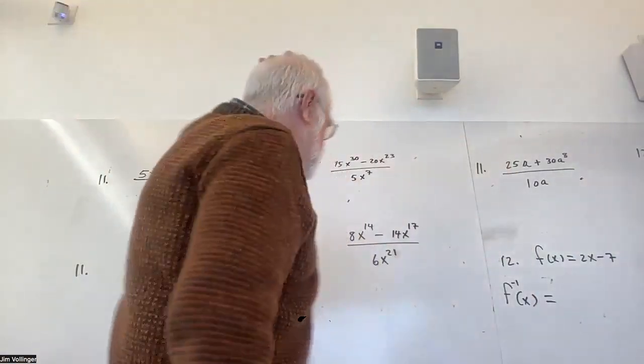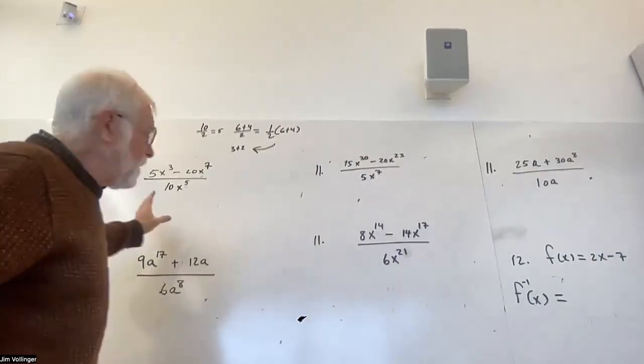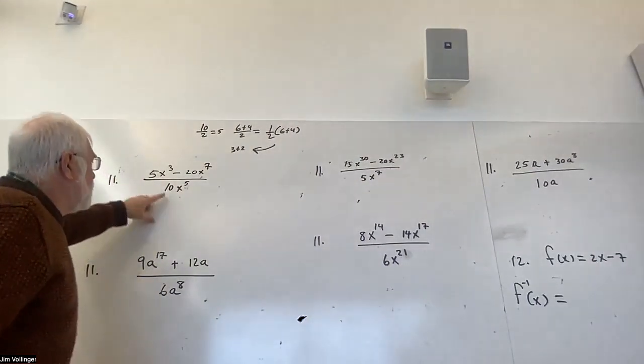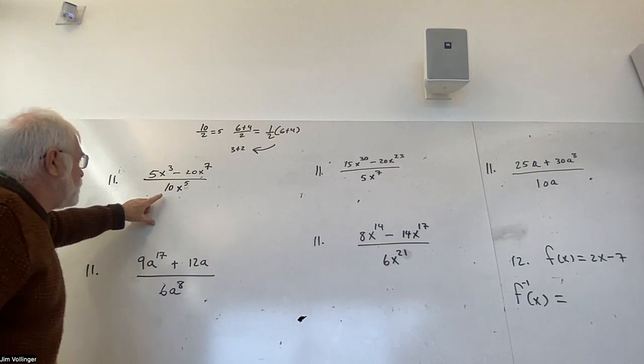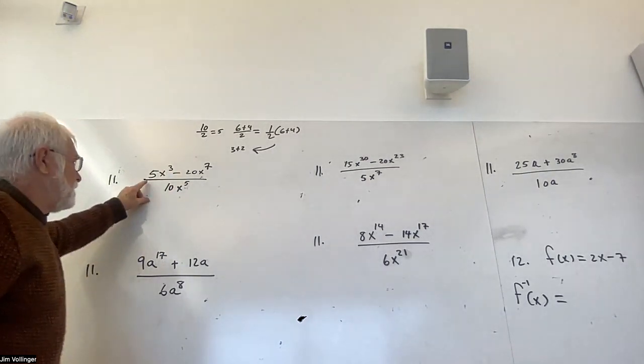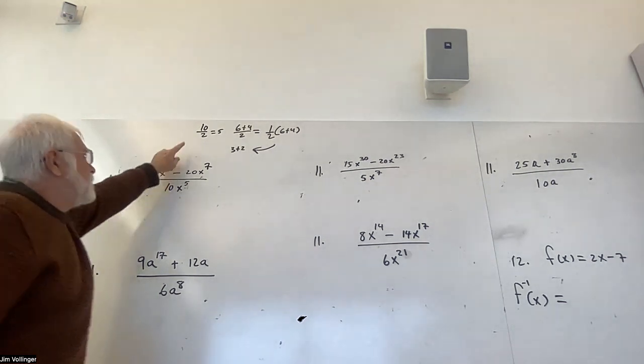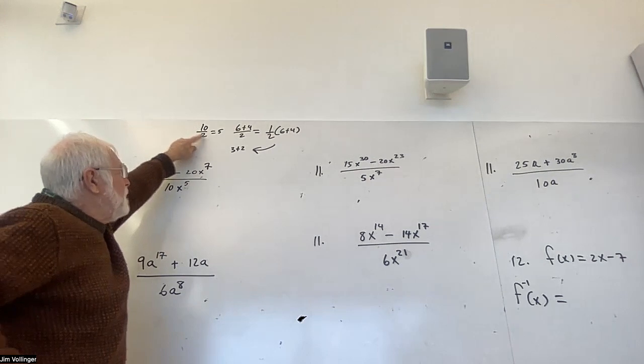Alright, continuing with our skill work. This problem is here because many students will cancel one of the fractions and leave the other one alone, and division undoes multiplication, not subtraction. So start with something you know, 10 divided by 2 is 5.